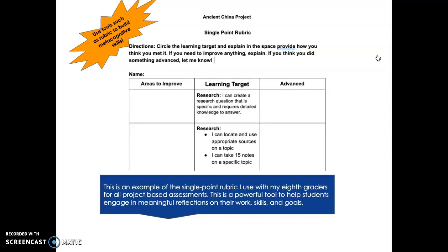The most important piece is that for every single project, I use a single point rubric. A single point rubric — if you're not using one, it is a time saver. You just put your learning target in the proficient column. For students, this is a great tool to use during and after the project. They might look at someone else's project and provide peer feedback on what they could improve before finishing. It's a clear and consistent way to give feedback, so students know how you're going to give them feedback, how to make sense of it, and how to act on it.